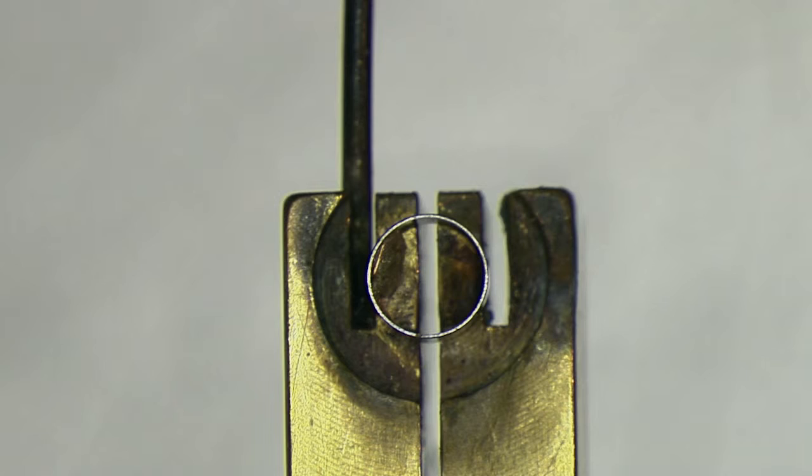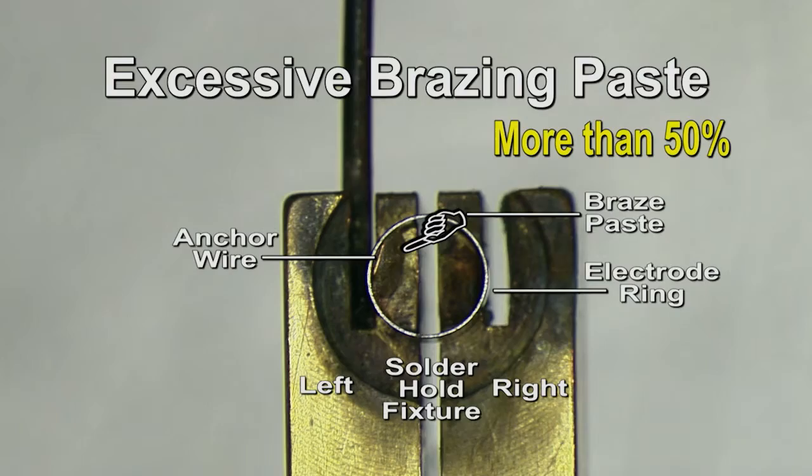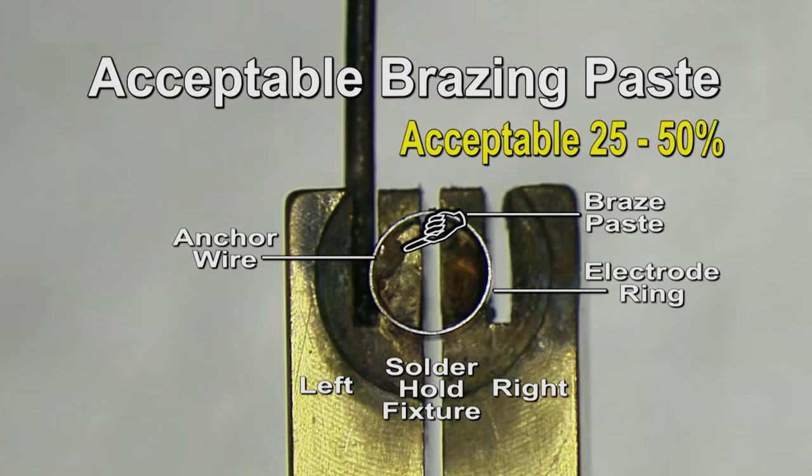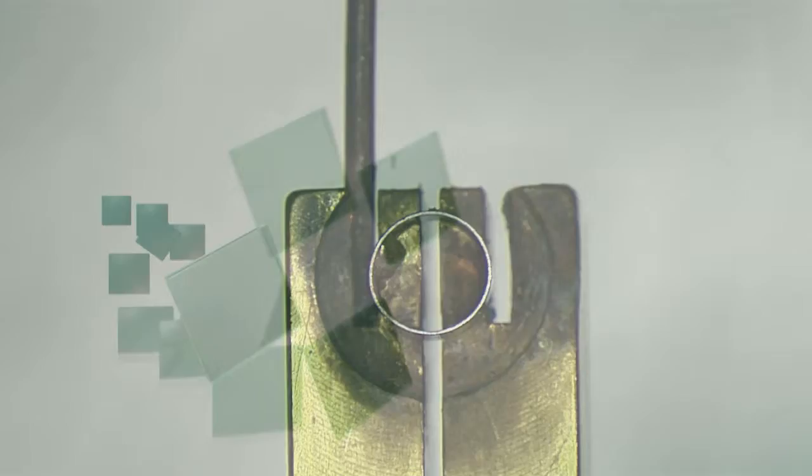If the paste covers more than 50% of the area, that is too much, or excessive. Scrap the ring. The goal is to cover 25 to 50% of the area with brazing paste. This is just right.